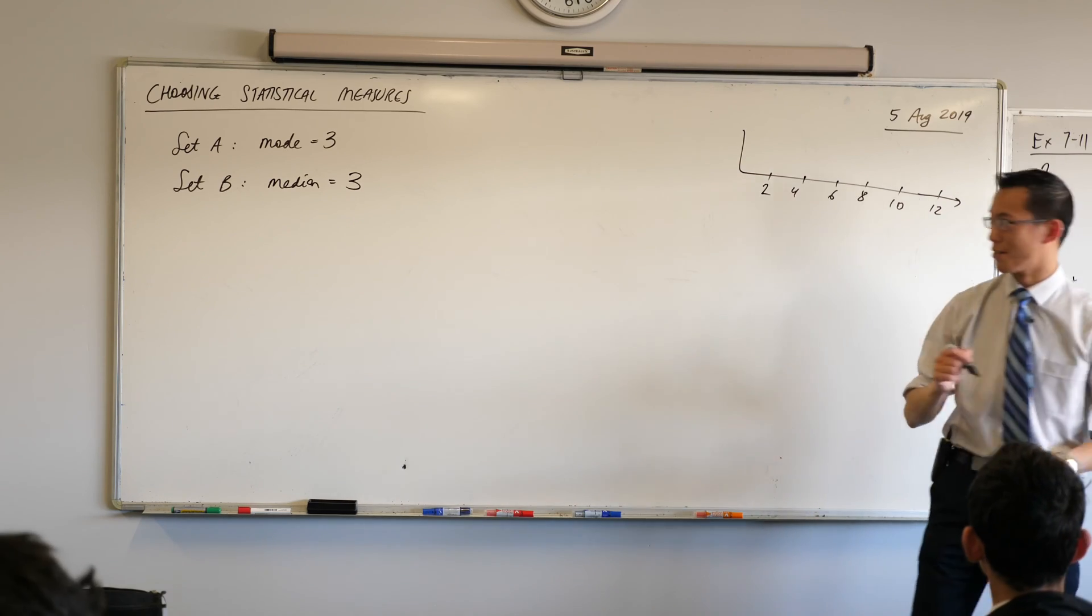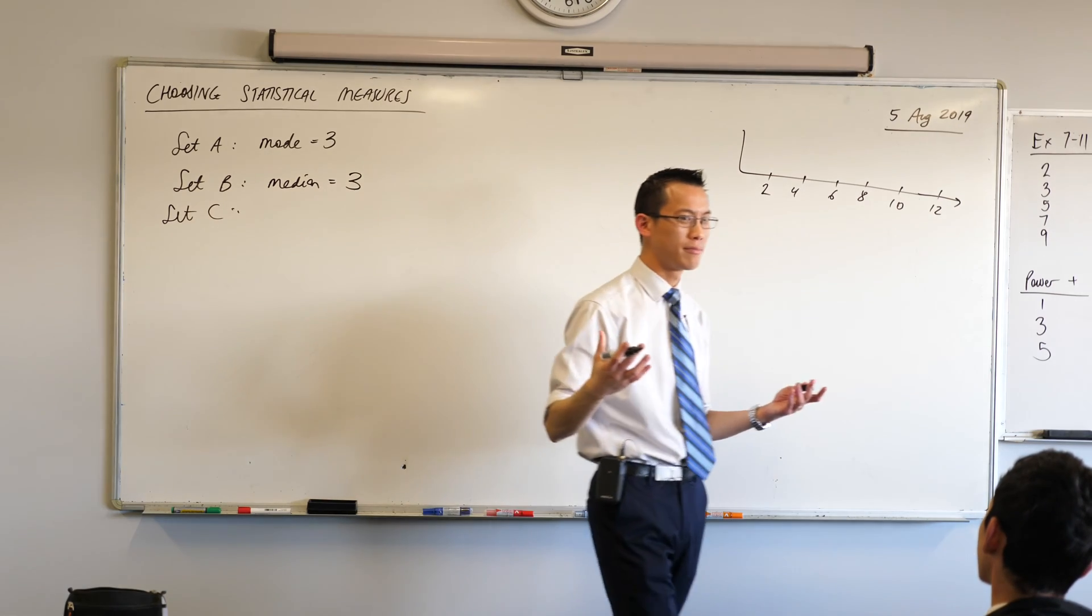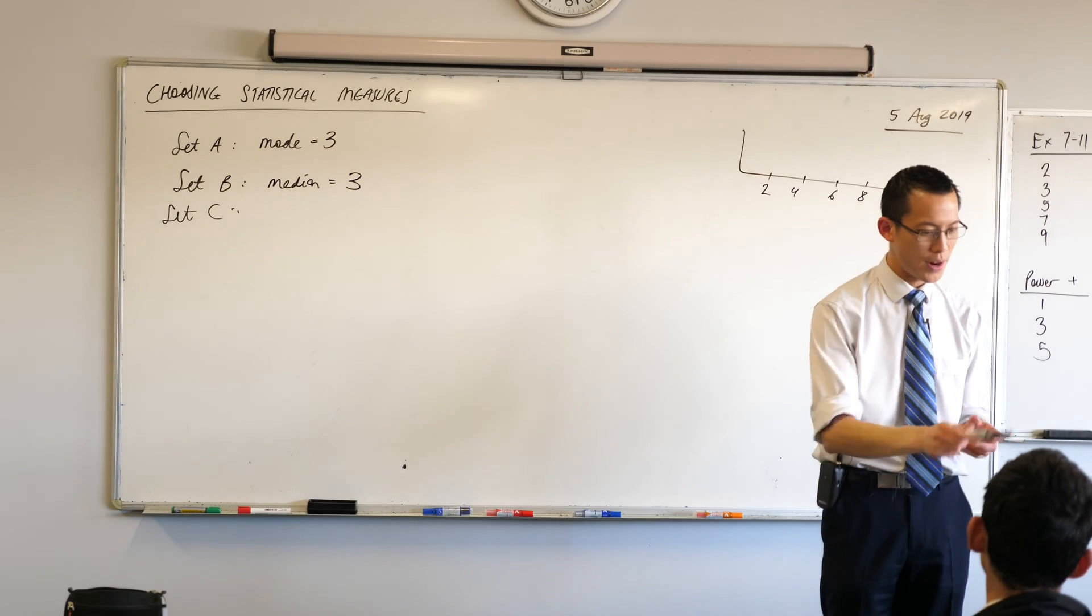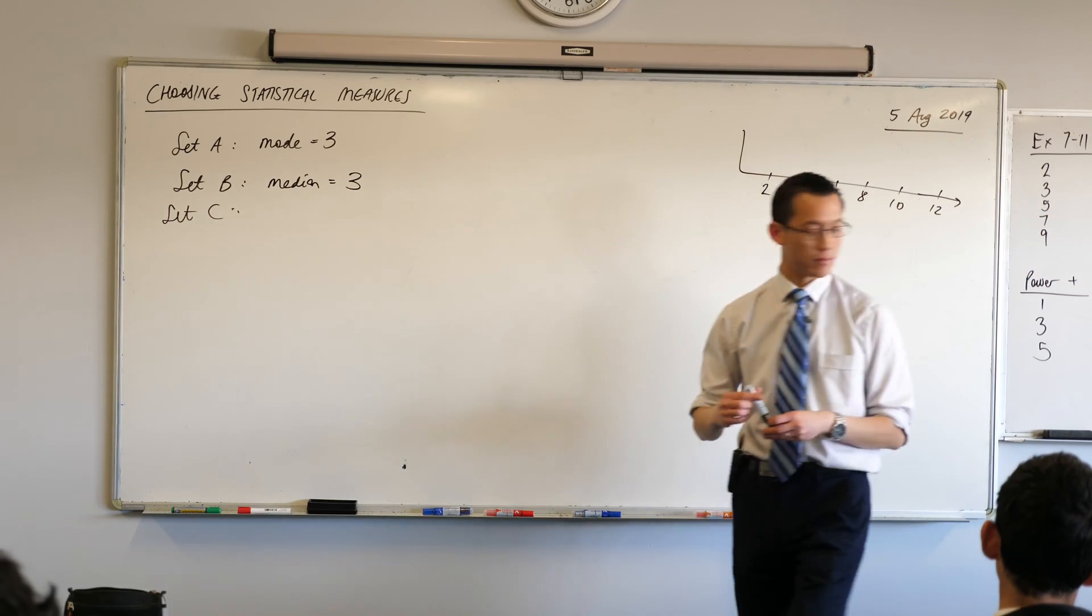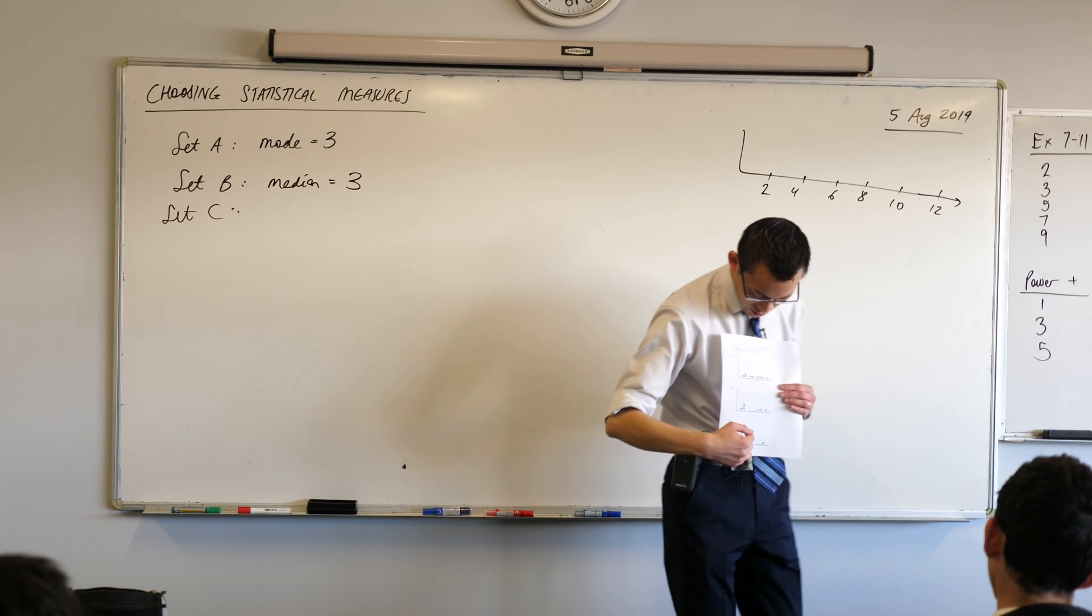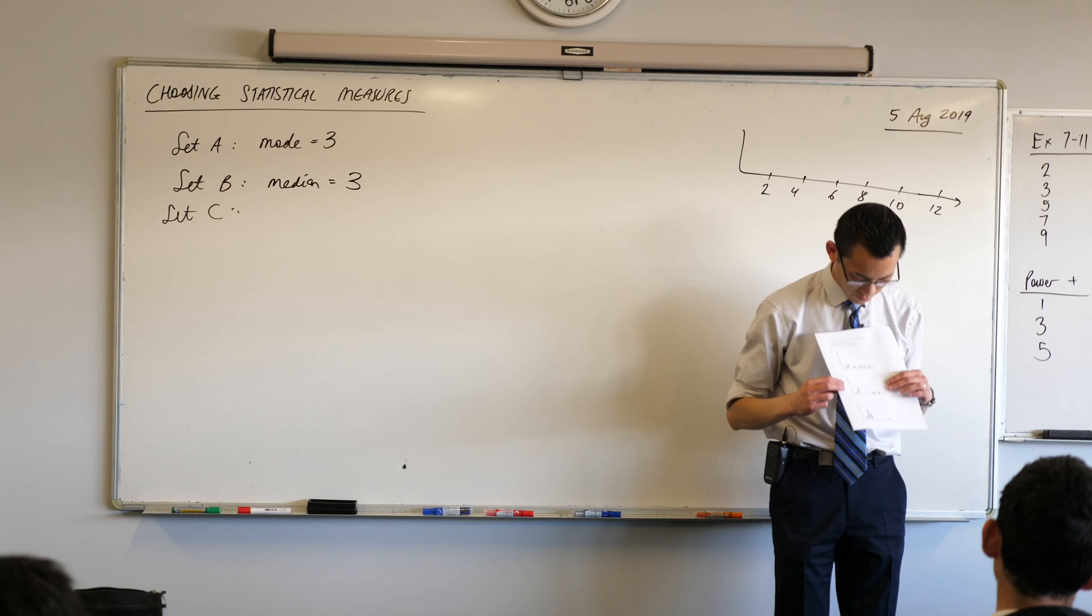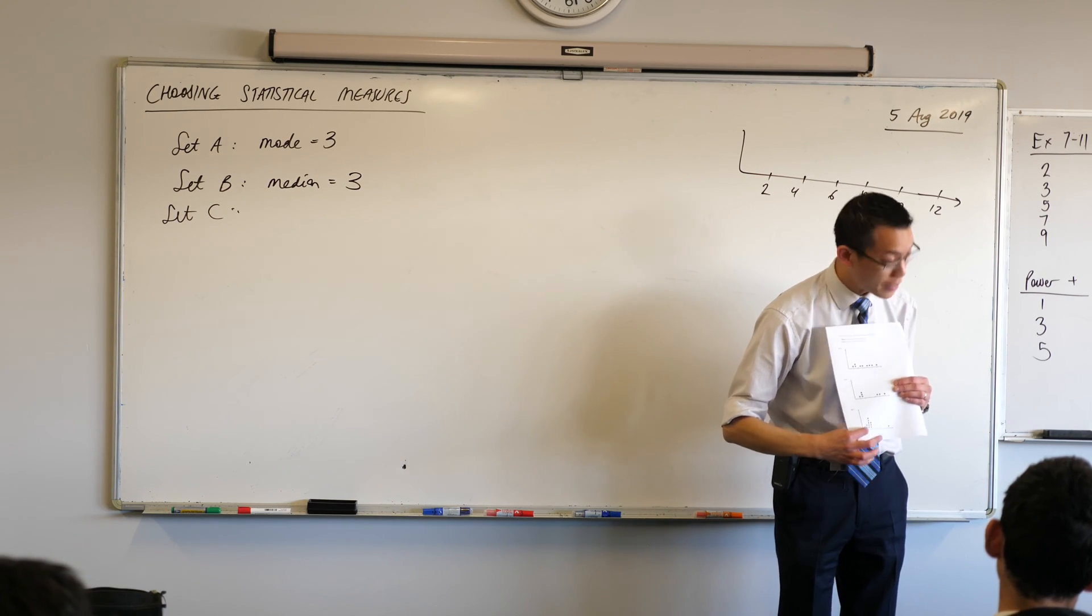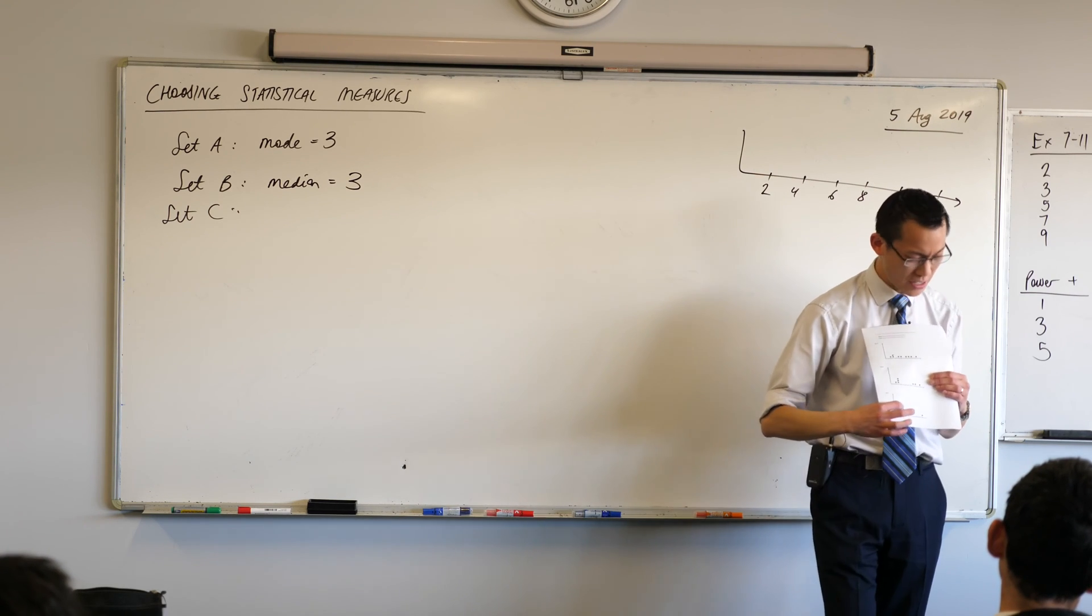Last one. Maybe you can guess. What's the last measure of center that I've got? It's the mean. Now why does the mean give us a problem on this very last set down the bottom? What do you see? What's the problem with it? Christian. There's no more than one number. There's only one of each number.